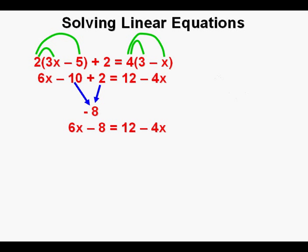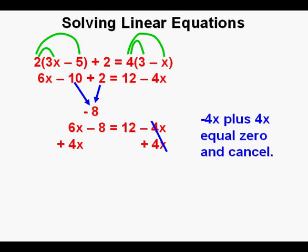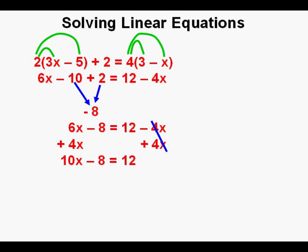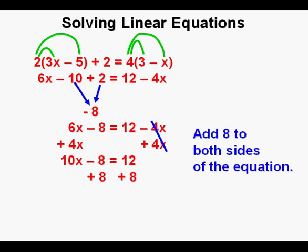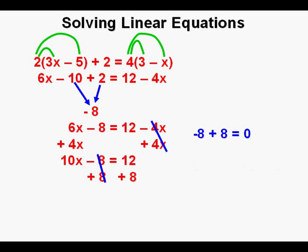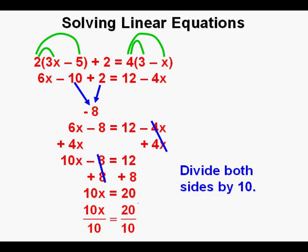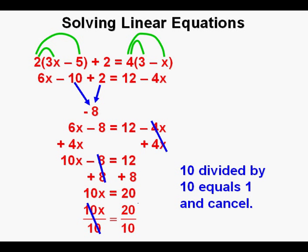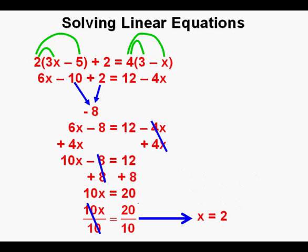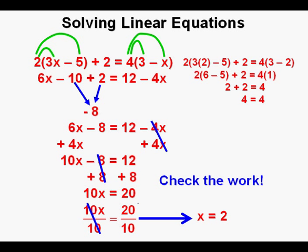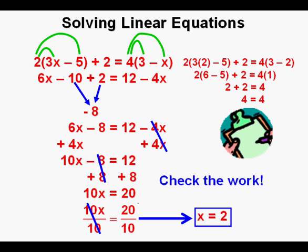We bring down 6x minus 8 equals 12 minus 4x. Next we can get rid of the minus 4x on the right side by adding it to both sides. Negative 4x plus 4x cancel on the right side. We bring down 10x minus 8 equals 12. Add 8 to both sides: negative 8 plus 8 cancel on the left side. We bring down 10x equals 20. Divide both sides by 10; 10 divided by 10 cancel on the left side. We have x equals 2.